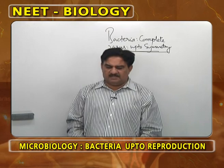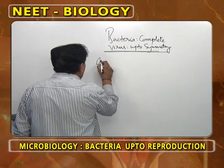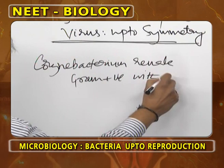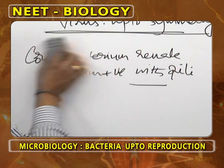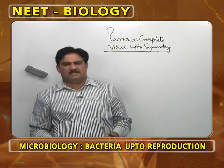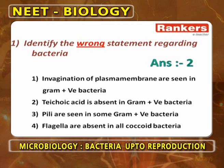Techoic acid is absent in gram positive bacteria — this is wrong. Pili are seen in some gram positive bacteria; for example, Corynebacterium renale is a gram positive bacteria with pili. Flagella are absent in all coccoid bacteria. So the wrong statement is 'techoic acid is absent in gram positive bacteria,' because techoic acid is present in gram positive bacteria and absent in gram negative bacteria.